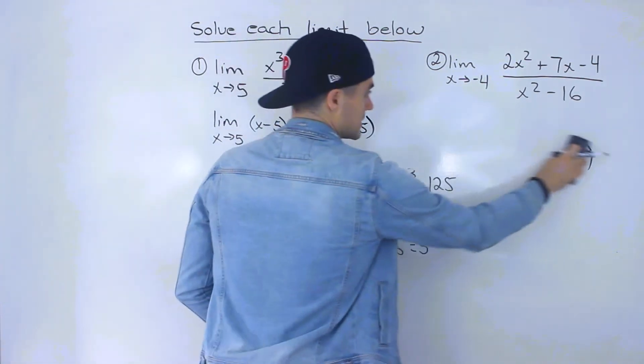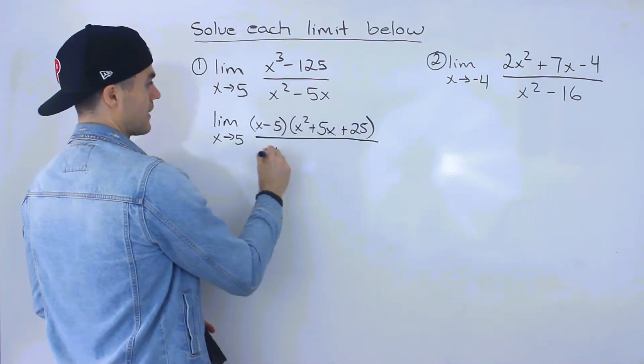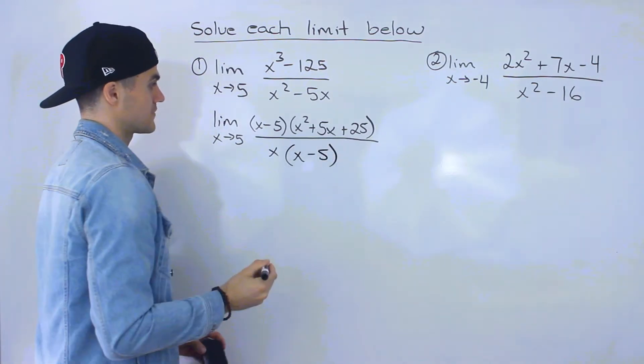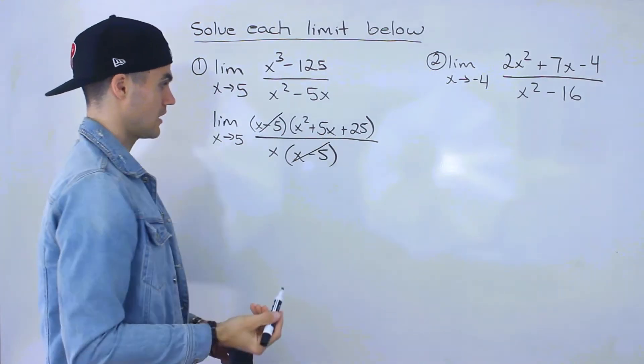And then notice in the denominator, we can factor out an x. So if we factor out an x, we'd be left with x minus 5. And now from here, notice that the x minus 5s cancel out.